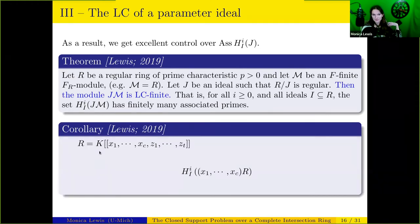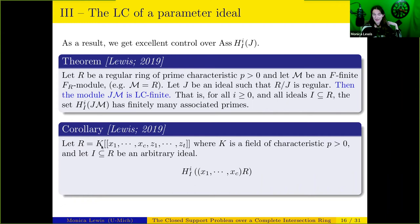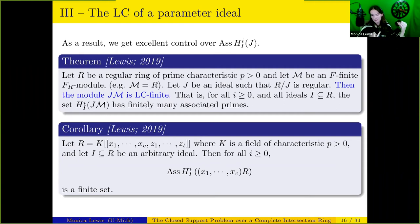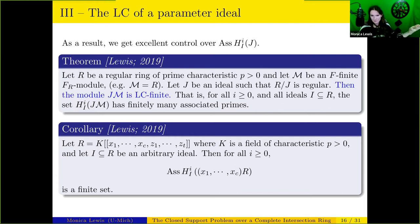To give a concrete version: take a power series ring and the ideal generated by the first c indeterminates, with k a field of characteristic p. Then H^i_I of that ideal will always have a finite set of associated primes. Summarizing where we stand: small cohomological degrees for parameter ideals — i=0, i=1, i=2 — are under control. And sufficiently nice regular parameter ideals in characteristic p are also fine. Similar ideas may apply in equal characteristic zero and certain mixed characteristic settings.